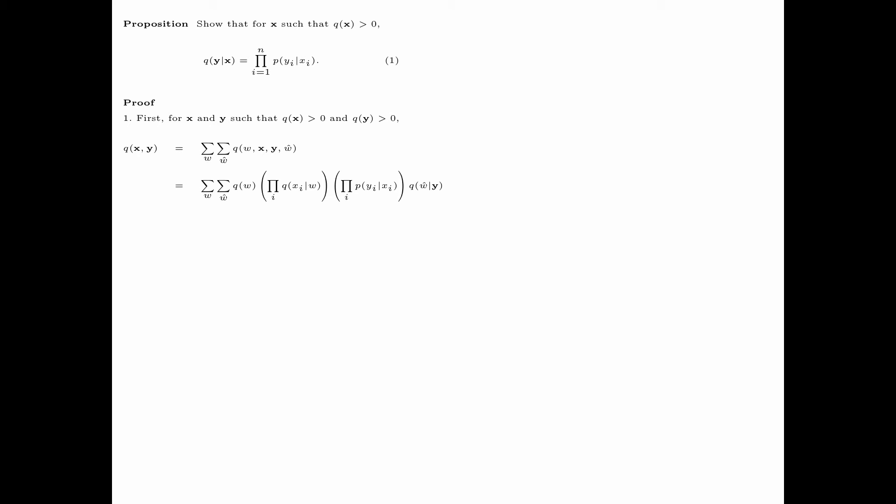The proof goes as follows. For all sequences X and Y such that q(X) > 0 and q(Y) > 0, we have q(X, Y) = Σ_W Σ_Ŵ q(W, X, Y, Ŵ). Applying our factorization for q(W, X, Y, Ŵ), we obtain an expression where the first three terms do not depend on Ŵ, so we can move them outside the summation over Ŵ. Then Σ_Ŵ q(Ŵ|Y) = 1, because q(Ŵ|Y) is a conditional distribution. Furthermore, ∏_i p(Yi|Xi) does not depend on W, so we can move it outside the summation over W.